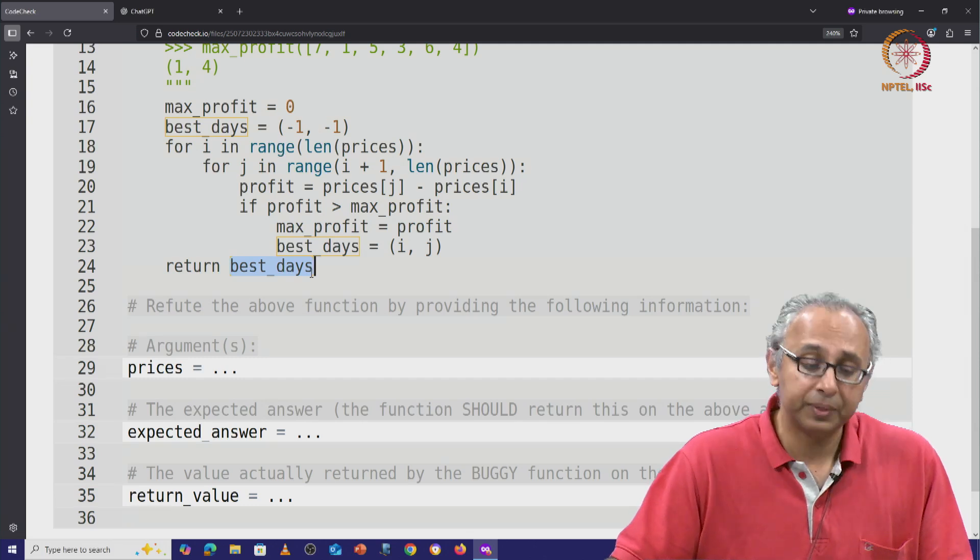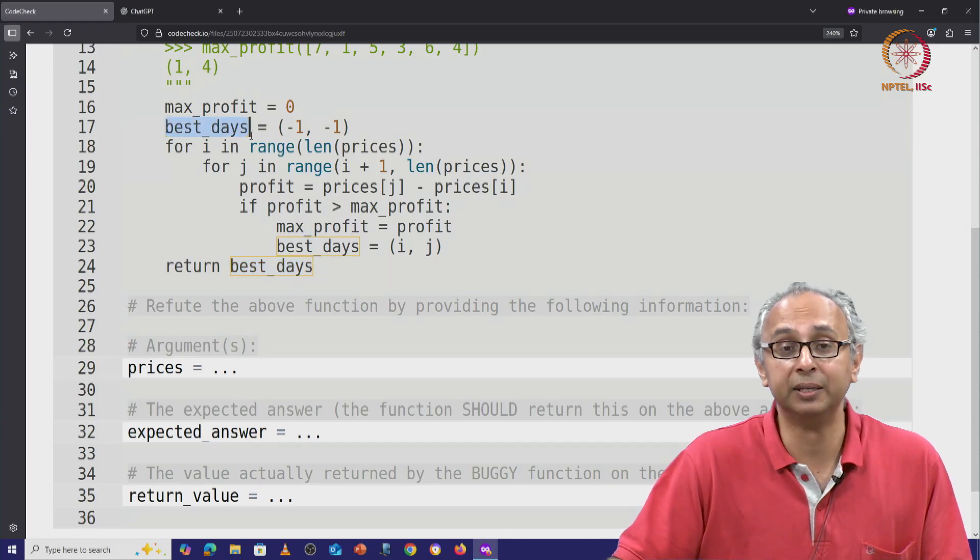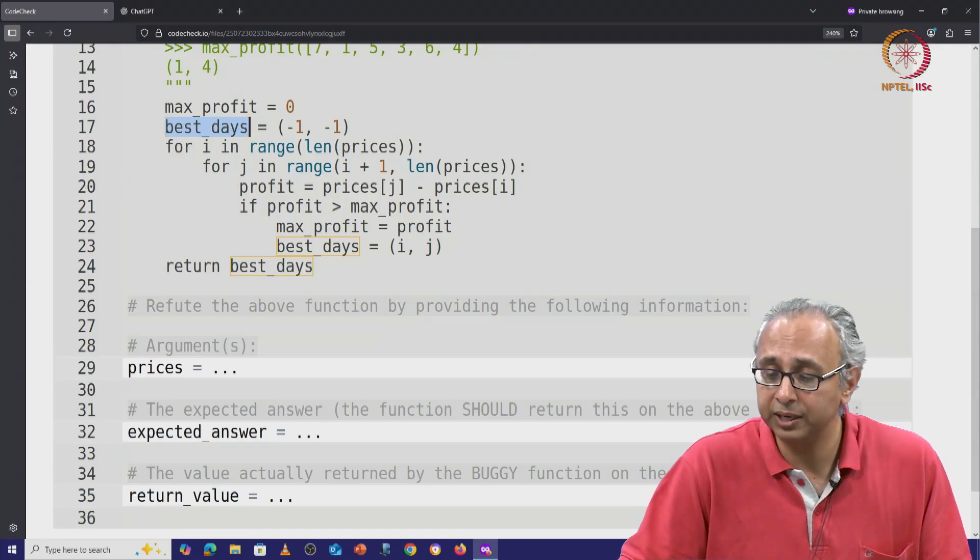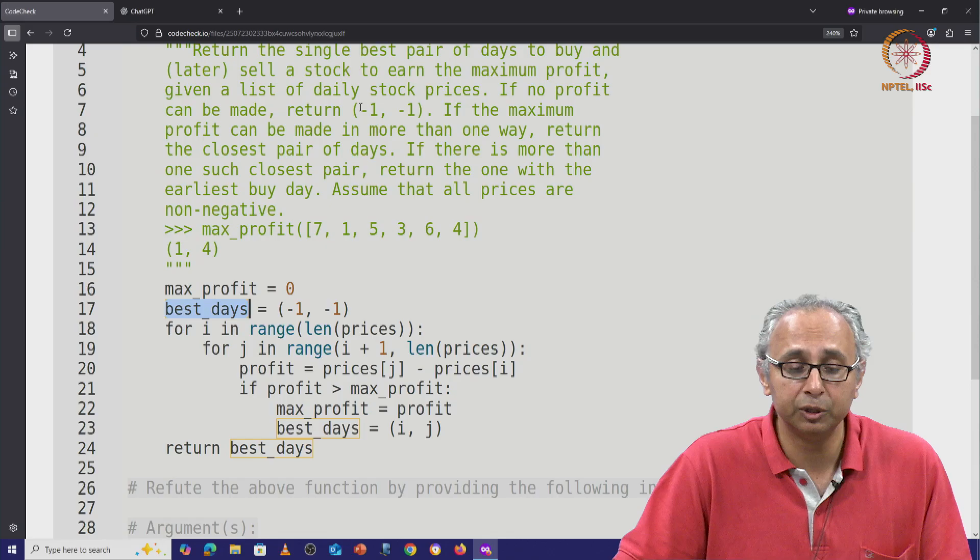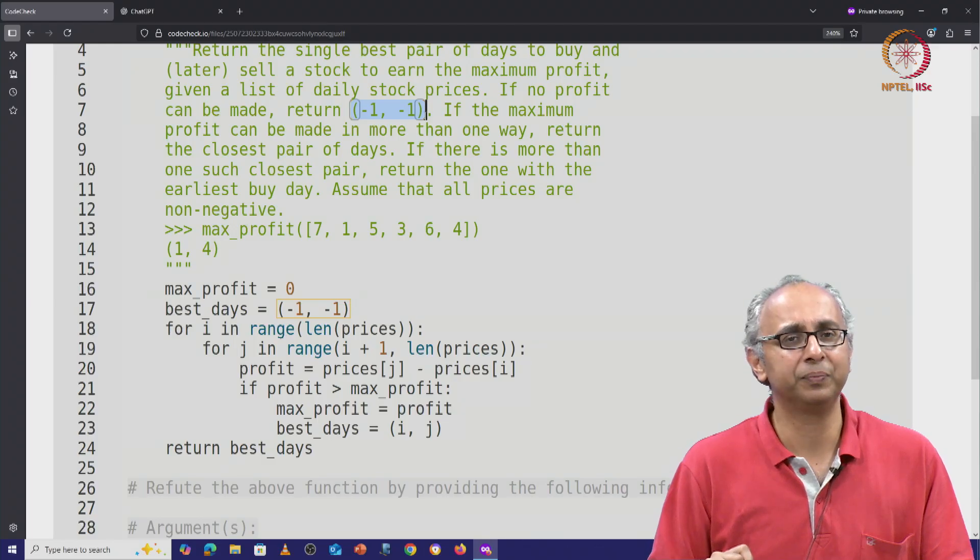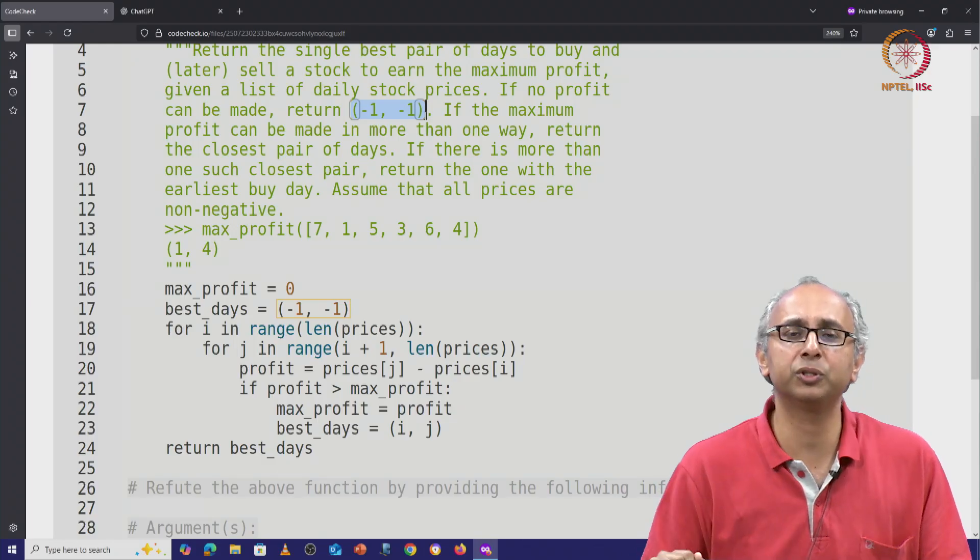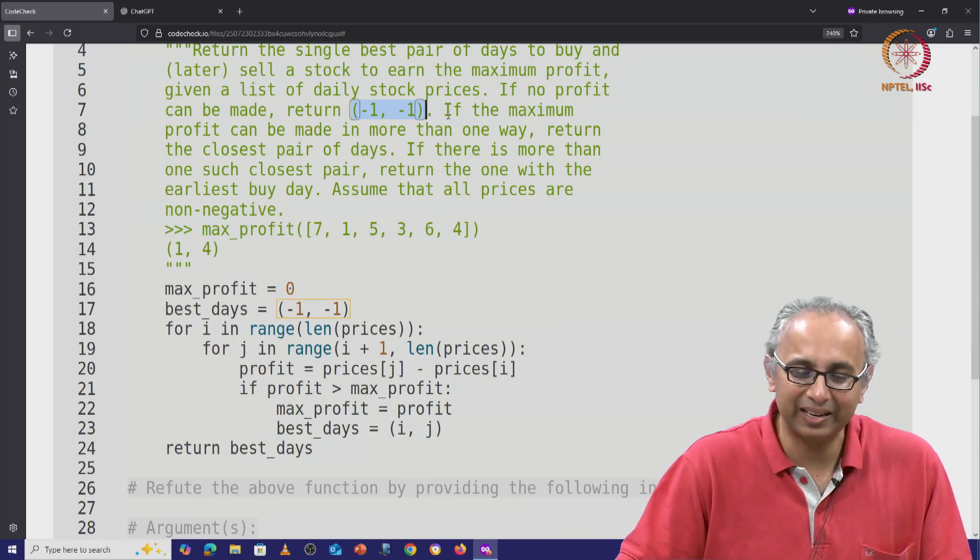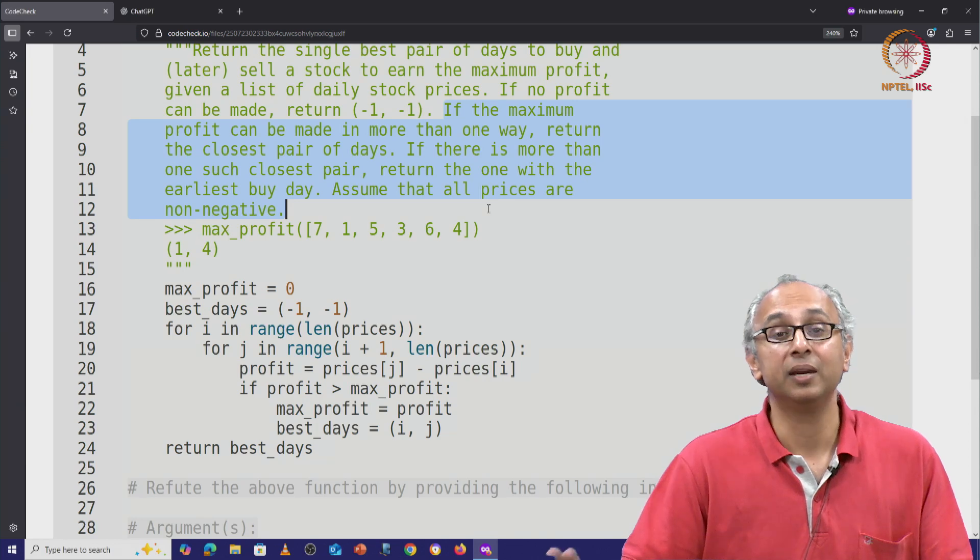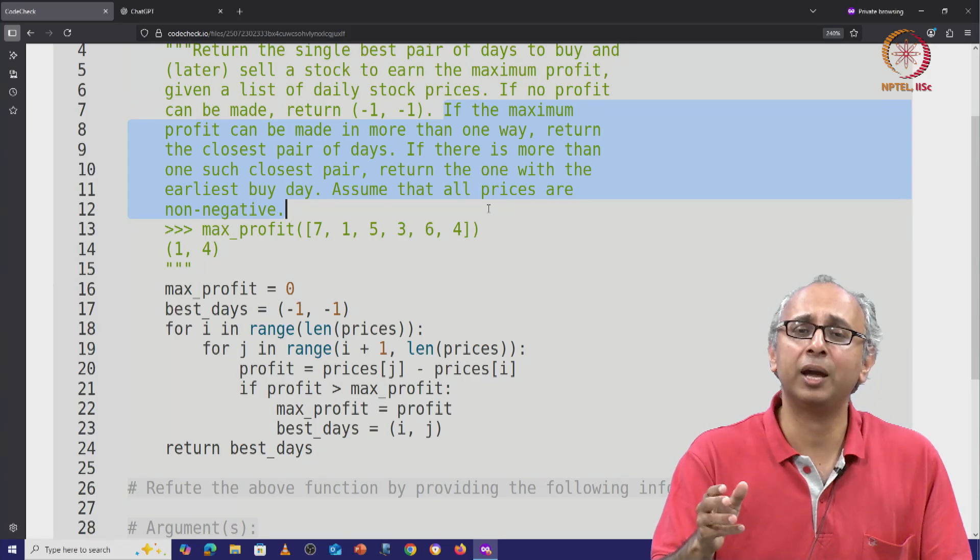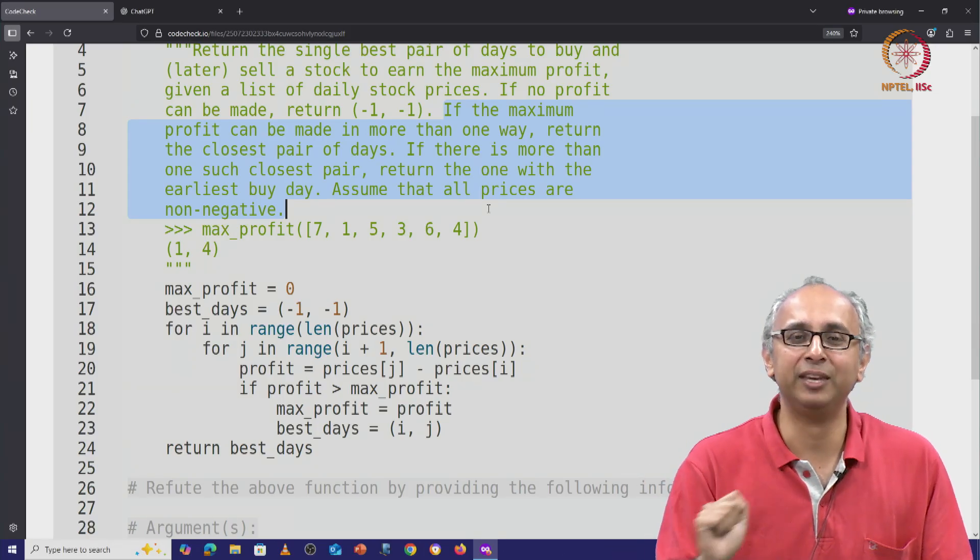And finally, whatever is the best answer we get, we will return that. Remember that best days may never change from its original value of minus 1, minus 1. Meaning, we never found a profit. And that is exactly what the doc string tells us to do. It says if you weren't able to find a profit, then you have to return minus 1, minus 1. So this code looks alright, at least for much of what the doc string is telling us. The problem of course is it doesn't handle all these special cases. Now, which one is it? I want you to try and find out. And I want you to try and ask chat GPT if it can figure out where the error is.